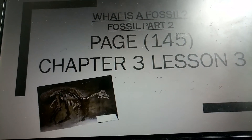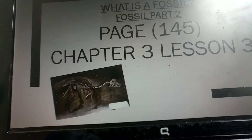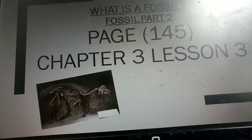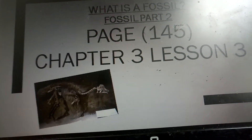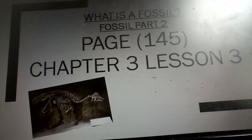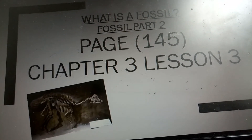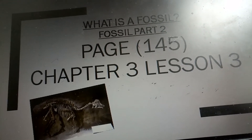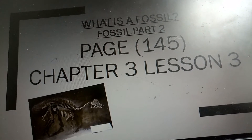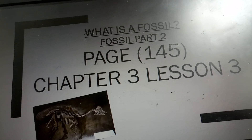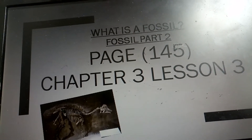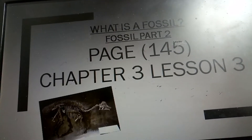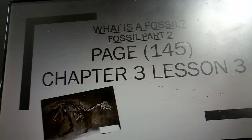Yesterday we started the topic on fossils. I decided to film from my slide so that I can share one or two things before I move to the board. A fossil is a print or part of a plant or animal that lived long ago. Some fossils are shapes left in rocks, some can be old bones or teeth, some can be very old shells, and fossil can even be wood. You can check my previous video to understand better.